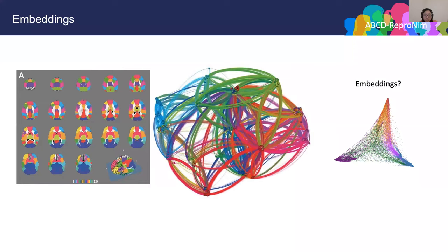Now let's look at the high-dimensional data again. We have clustering techniques that reduce the node dimension. Still, we'd like to understand the structure of such a connectome. Instead of reducing the dimension of the nodes, this time we need to reduce the dimension of the connectome to simplify the data. Embedding is a technique we can use to reduce such dimension and discover the structure of the connectome in a simplified embedding space.